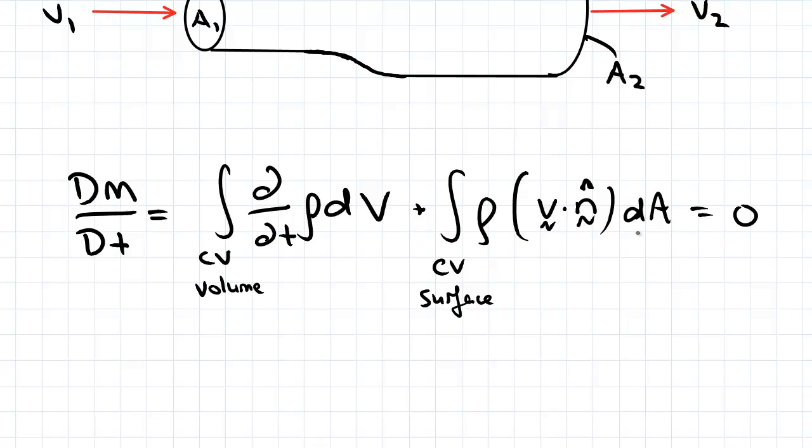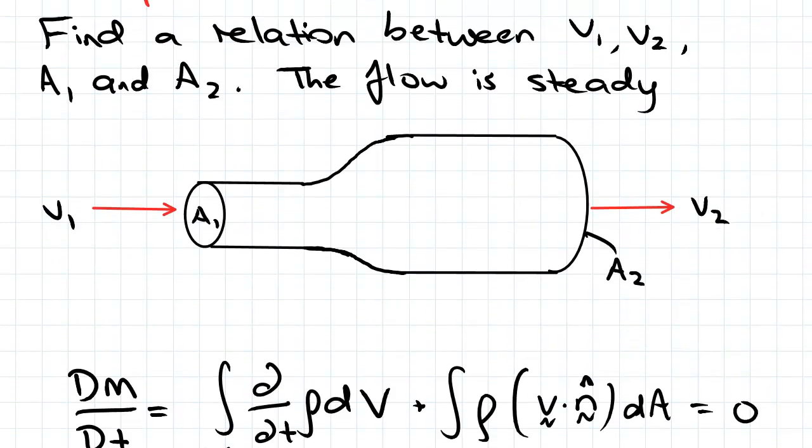So the very first thing we do in all of these types of questions is define the control volume. So in this example I'm going to take the whole nozzle as the control volume. Labeling is a bit subjective. So I like to just number the surfaces and you can draw out the outline of the control volume. But I've just pointed to the nozzle here and I'm going to call this surface 1 and surface 2.